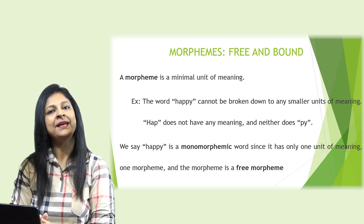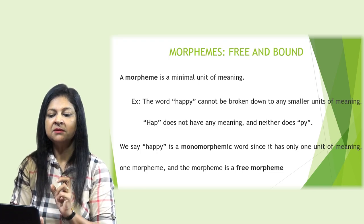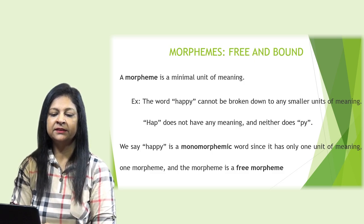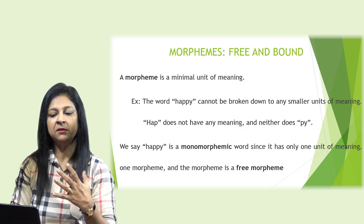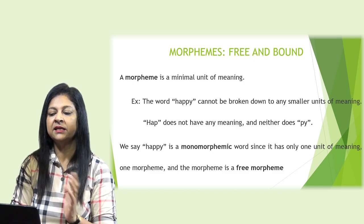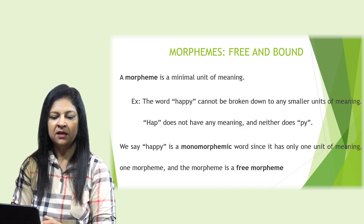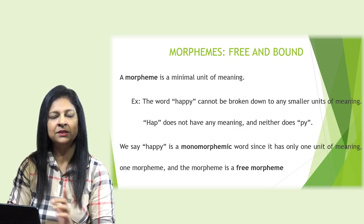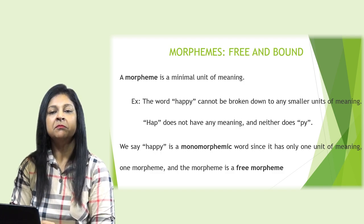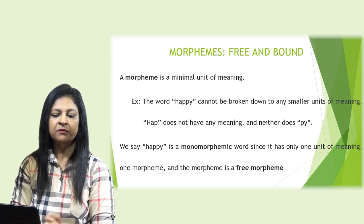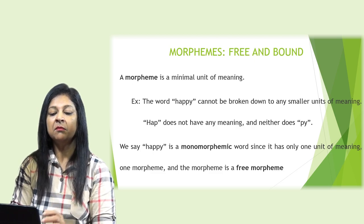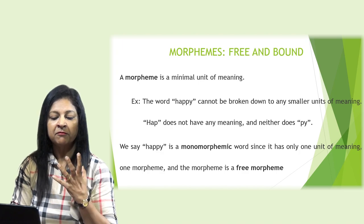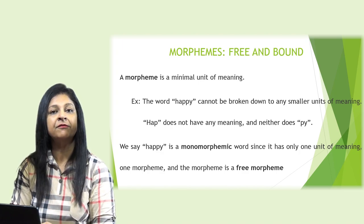Morphemes — free and bound. A morpheme is a minimal unit of meaning. If you take the word 'happy,' you cannot break it down into any smaller unit of meaning — 'hap' does not have any meaning, nor does 'py.' So we say 'happy' is a monomorphemic word, since it has only one morpheme. That morpheme is a free morpheme.